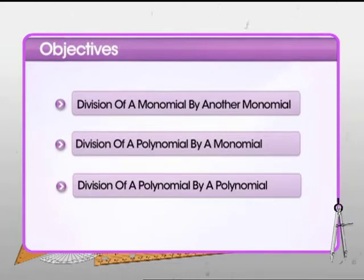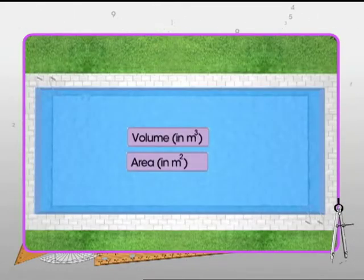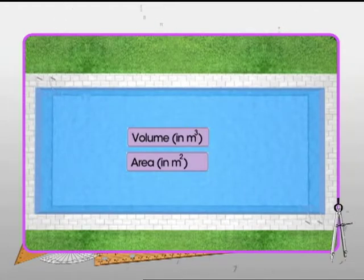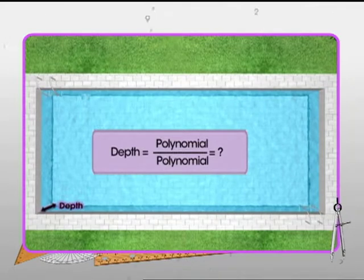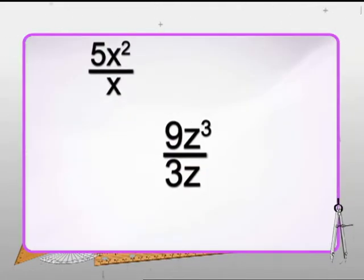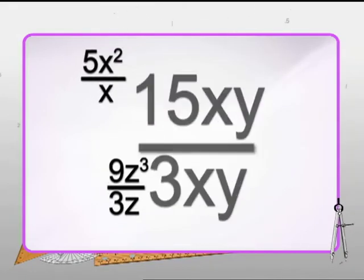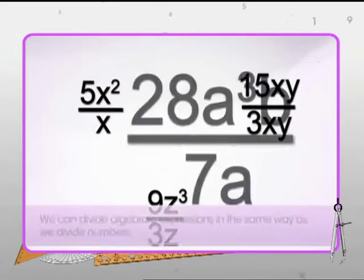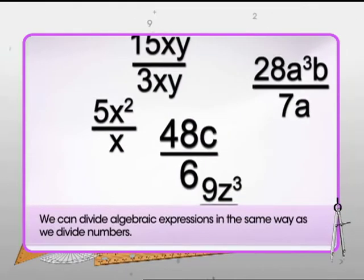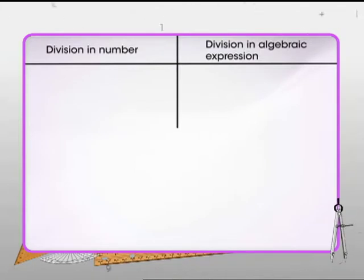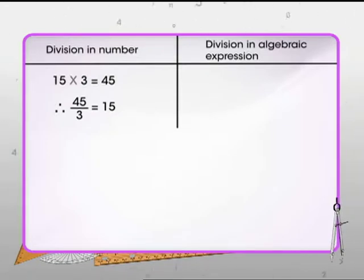Given the volume and area of the base of a pool, we can find its height if we know how to divide a polynomial by another polynomial. To learn that, we first study how to divide one monomial by another monomial. We can divide two monomials in the same way as we divide numbers. We know that in numbers, division is the inverse operation of multiplication.